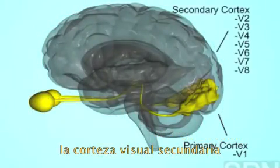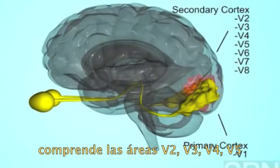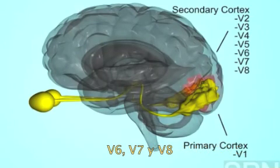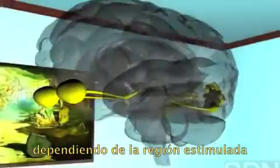The secondary visual cortex, which comprises V2, V3, V4, V5, V6, V7 and V8 regions, depends on the V1 region.